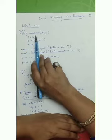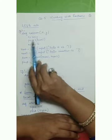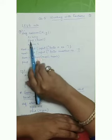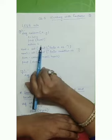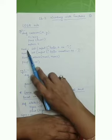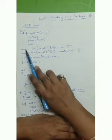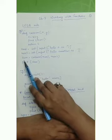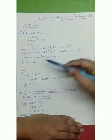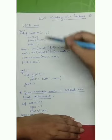We have a function called 'calcum' with variables x and y. Inside it, s equals x plus y, and we print num1 — which is not part of the calcum function — then return s. In the main function, num1 and num2 are created from user input, and we call calcum with num1 and num2, so num1's value copies to x and num2's value goes to y.